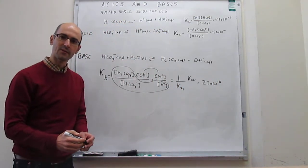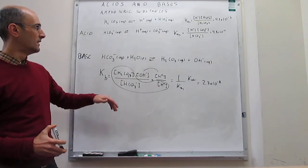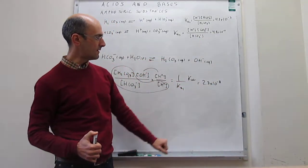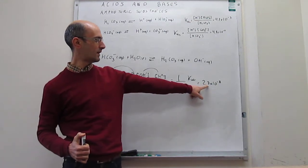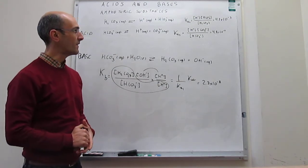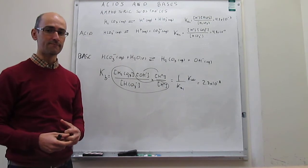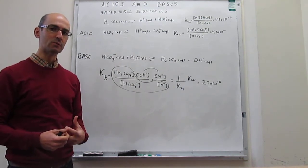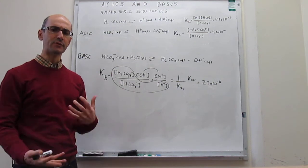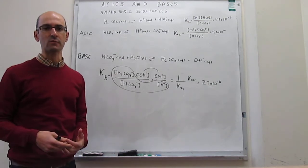Now we can compare the acid and basic properties of bicarbonate. The acid equilibrium constant Ka2 is about 4.8×10⁻¹¹, while the base equilibrium constant Kb is about 2.3×10⁻⁸. Clearly the basic equilibrium constant is much greater than the acid equilibrium constant — by about three orders of magnitude. So when you put bicarbonate in water, the base properties dominate and you get a basic solution. That is how you determine for an amphoteric substance which behavior is more important: compare the equilibrium constants.